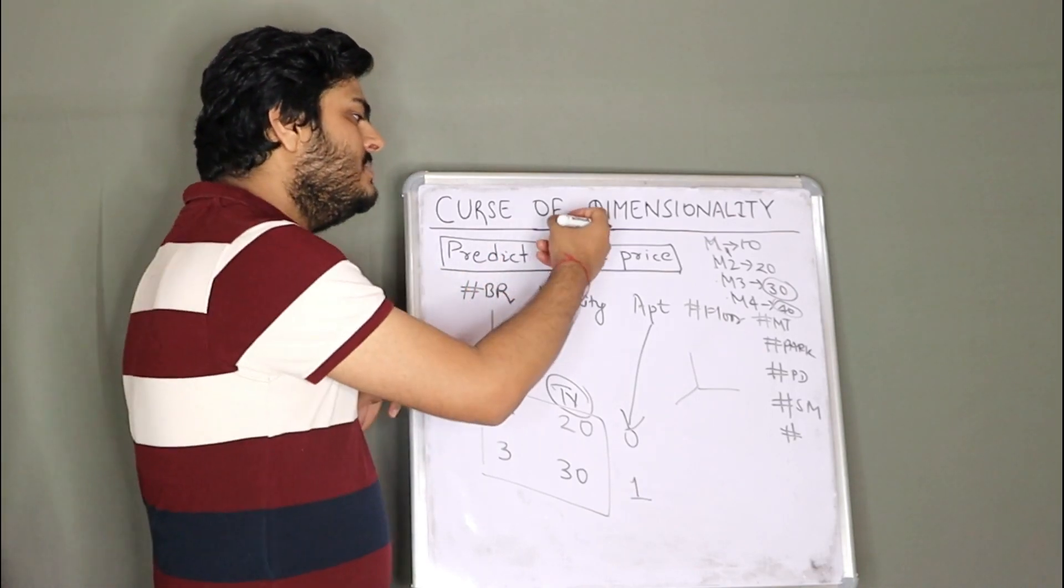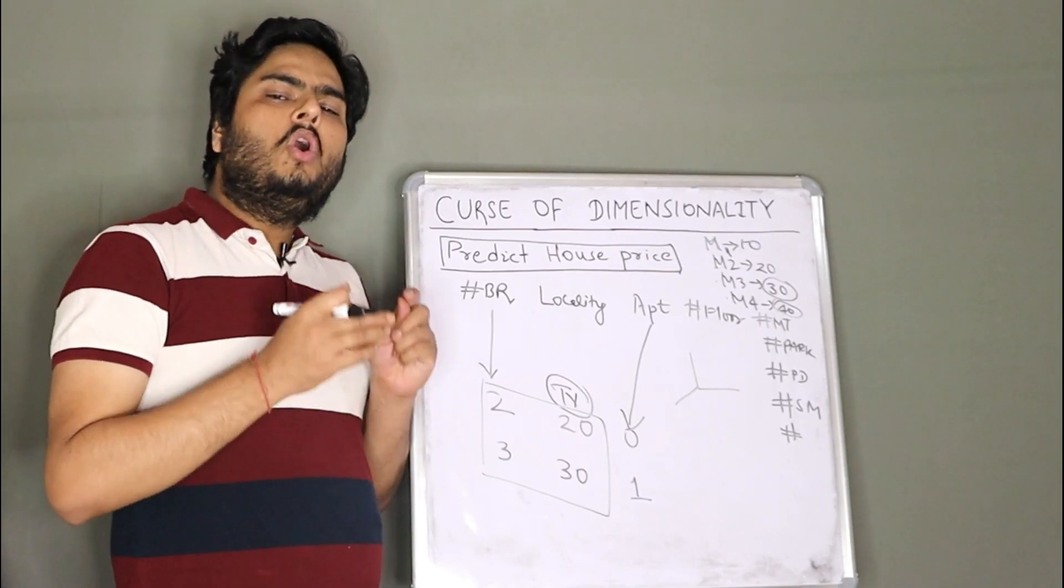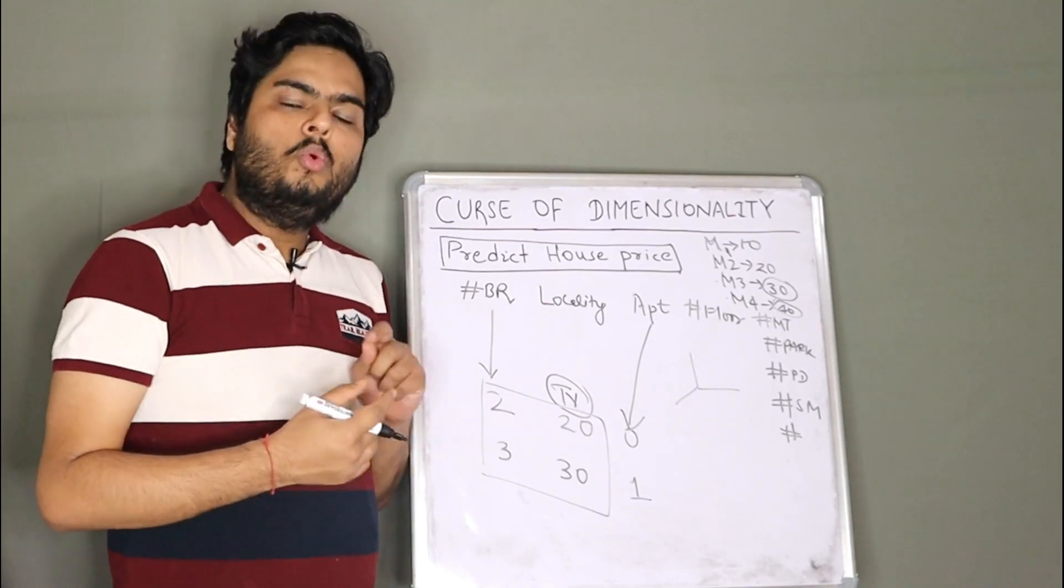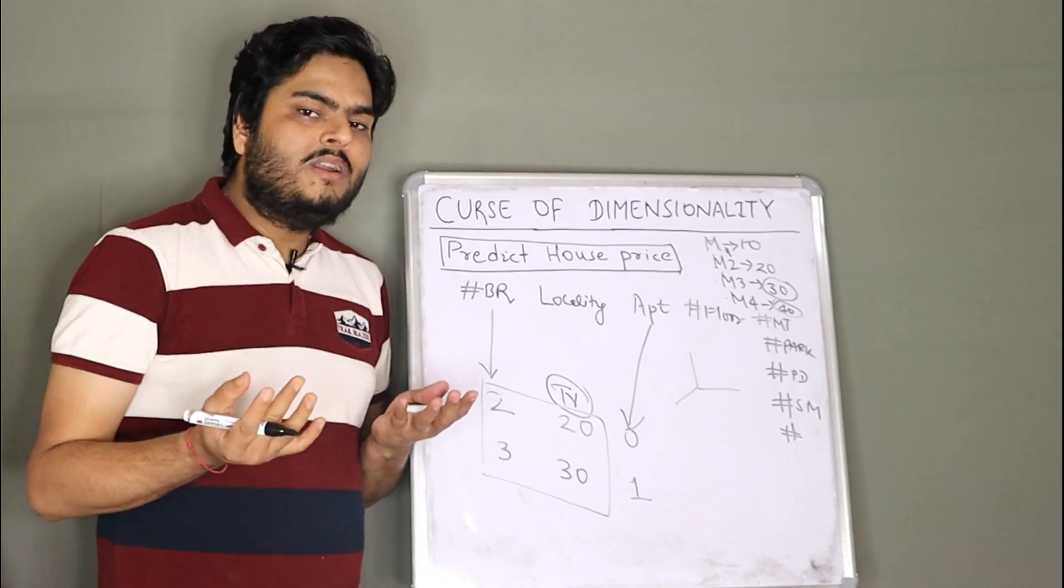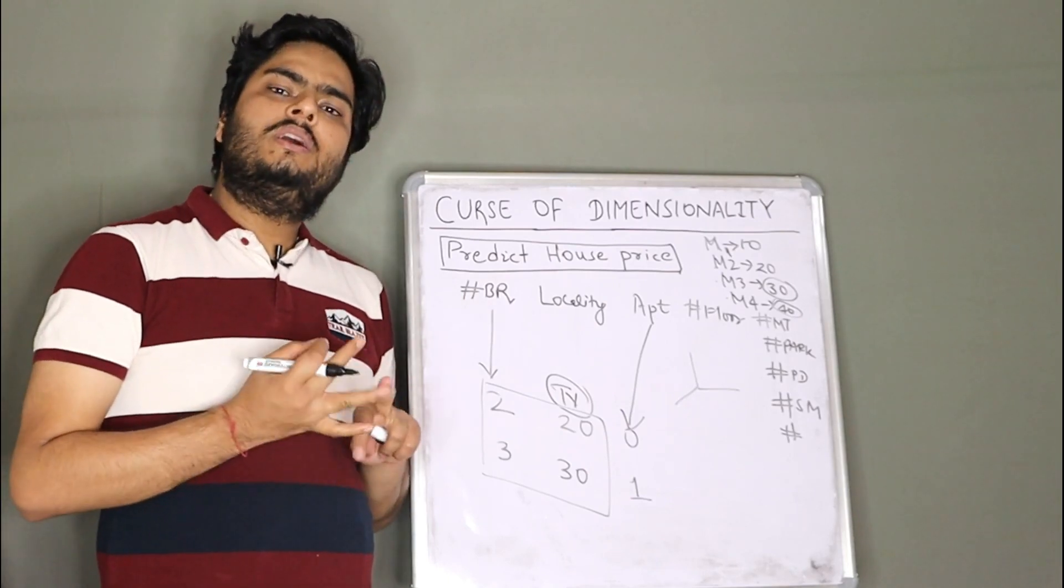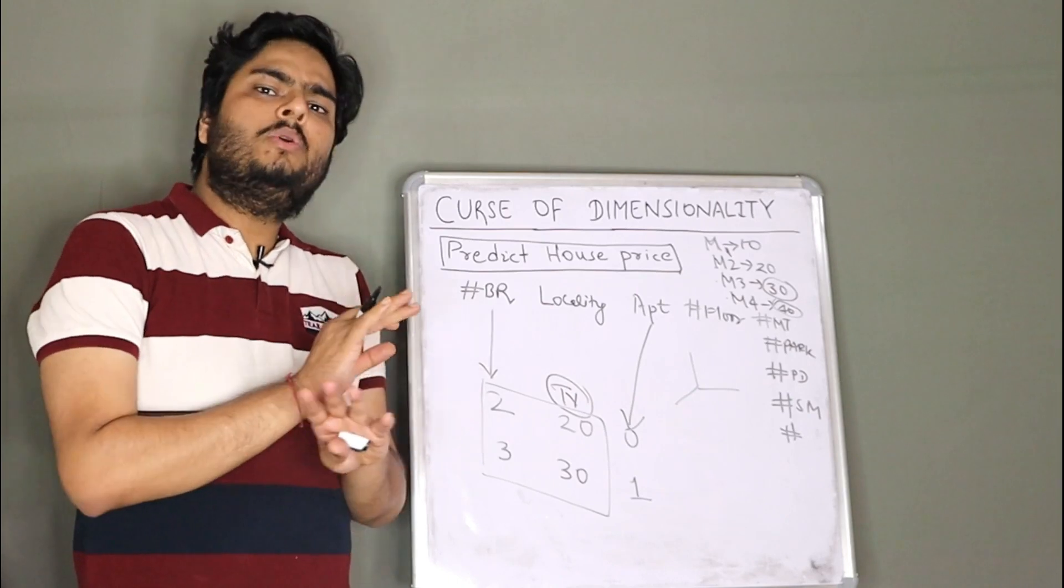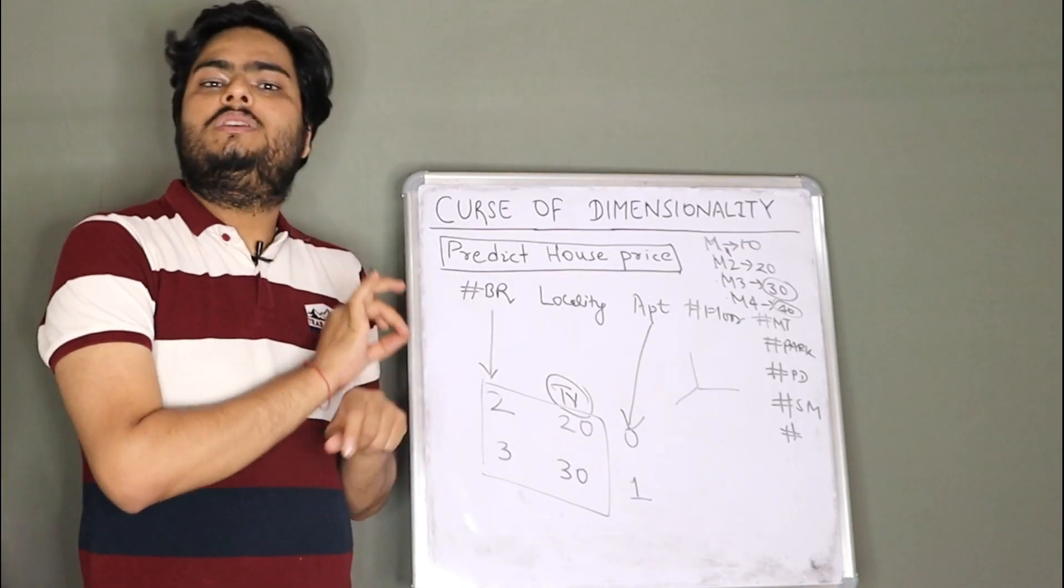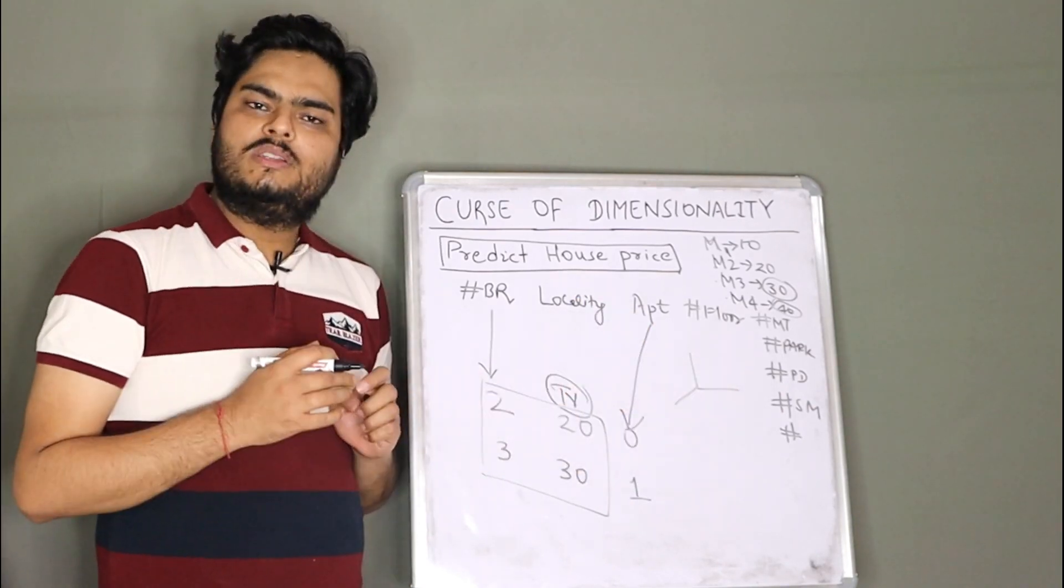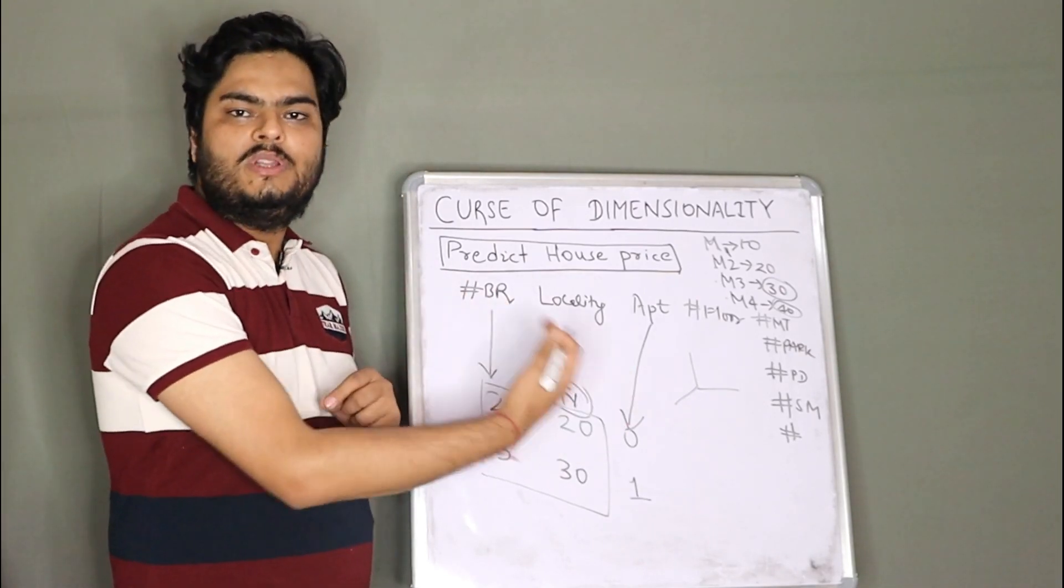So what is curse of dimensionality by definition? By definition, curse of dimensionality is all the phenomena that occurs because of high dimensions in the data. One phenomena is model cannot generalize the underlying pattern. Second phenomena is model can overfit. Third phenomena model can underfit sometimes. Fourth phenomena model might not be able to utilize important features as well. Suppose this is an important feature and you give some non-important features, model will not be able to utilize this also due to impact coming from other features.